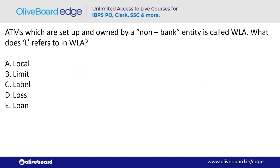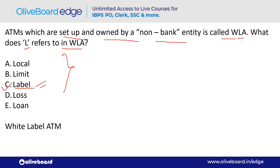ATMs that are set up and owned by a non-bank entity are called WLA. What does 'L' stand for in WLA? L stands for Label — option C. The full form is White Label ATM. These ATMs are set up and owned by non-bank entities.